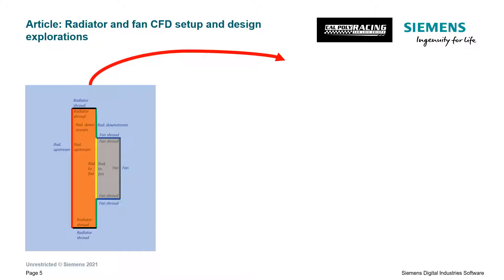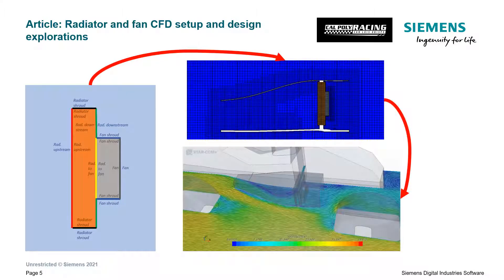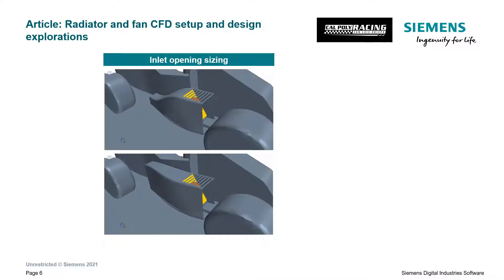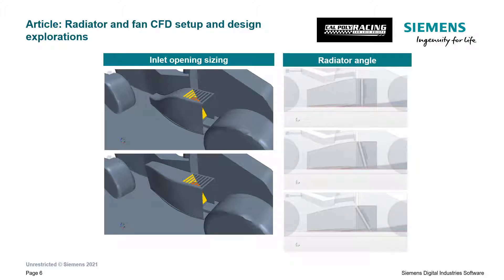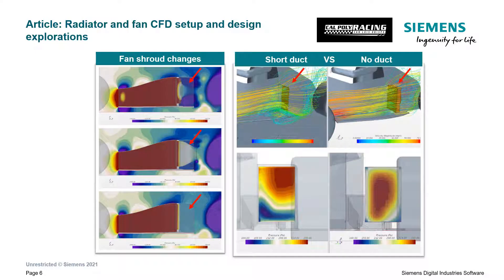An article was developed in collaboration with the Formula SAE team at Cal Poly San Luis Obispo to show how to set up and validate both a radiator and a fan in Star CCM Plus. That setup was then used to explore different radiator and fan configurations such as opening sizes and their effective mass flow through the radiator core, radiator angles and how that affects mass flow and forces on the duct, fan shroud changes including exploring how removing the fan affects mass flow, a short duct versus no duct, and other considerations.